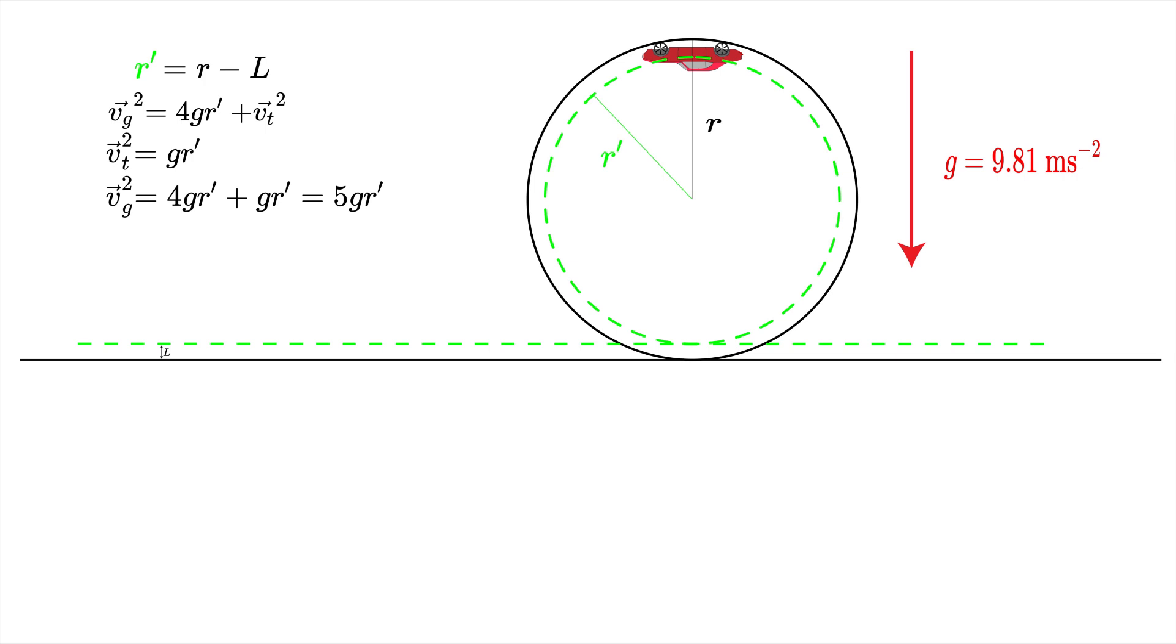Now we just need to substitute for r prime, and we get that vg squared is equal to 5g times (r minus L), so the velocity is the square root of this.